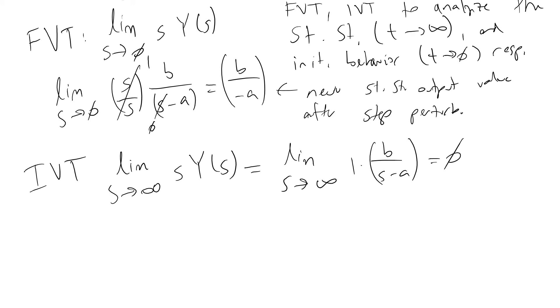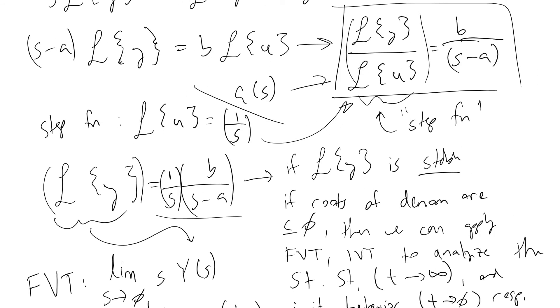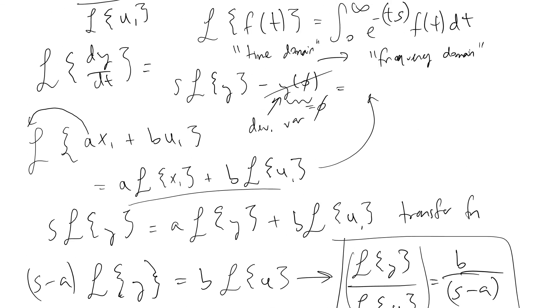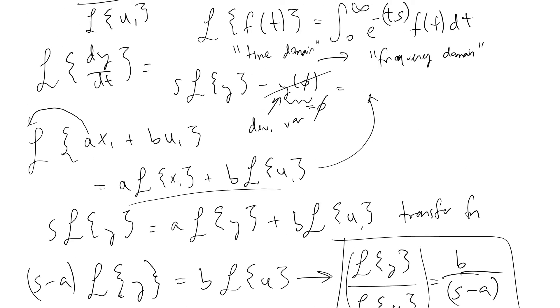And so what this tells us is that because we are working with deviation variables, our system will be at steady state. Because as you'll recall earlier, when we were taking our Laplace transforms, we said that our deviation variables were 0 because we assumed our system was at steady state. We see it agreeing later on in the math.